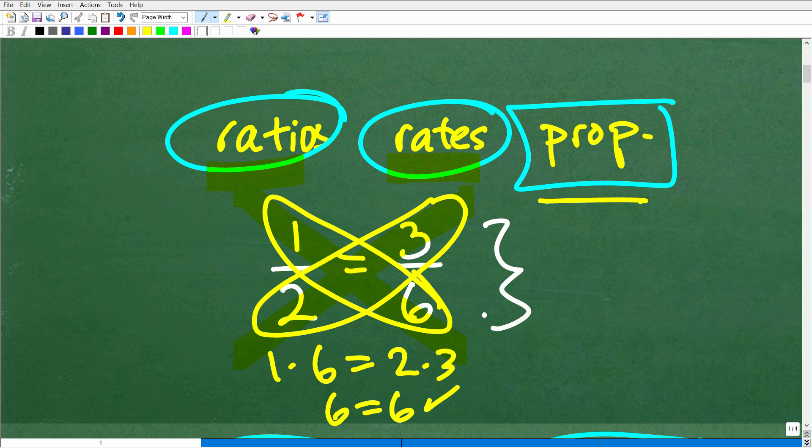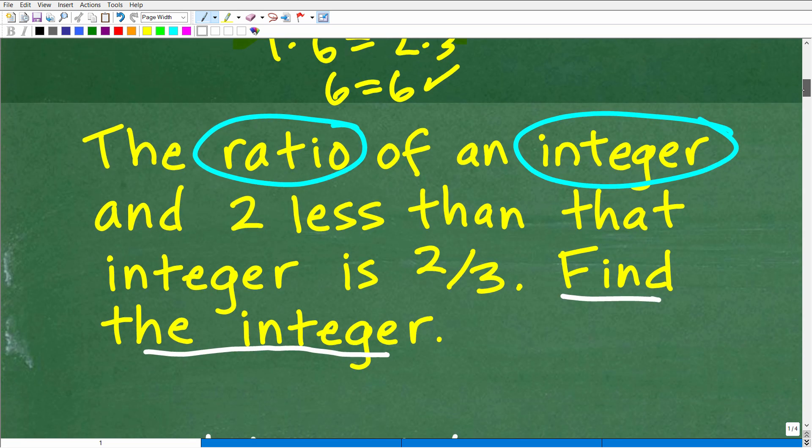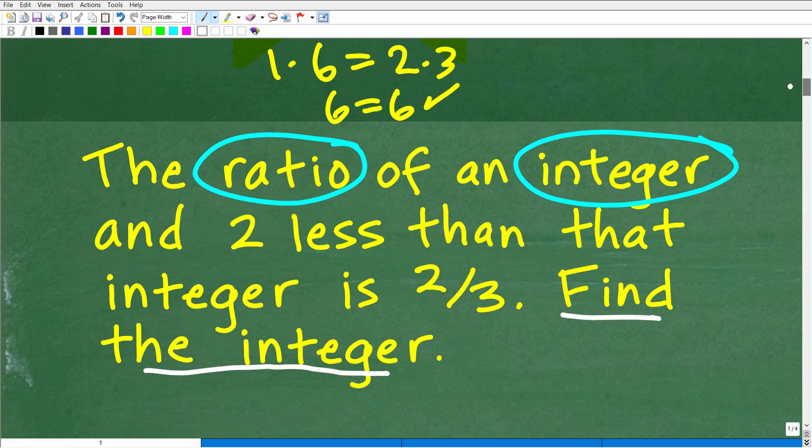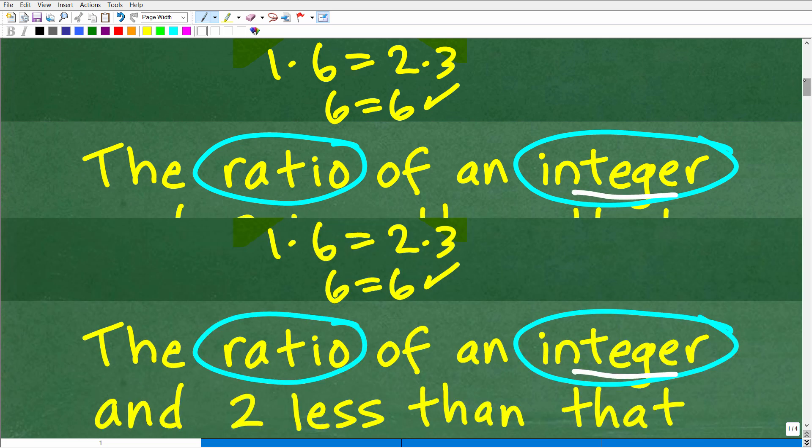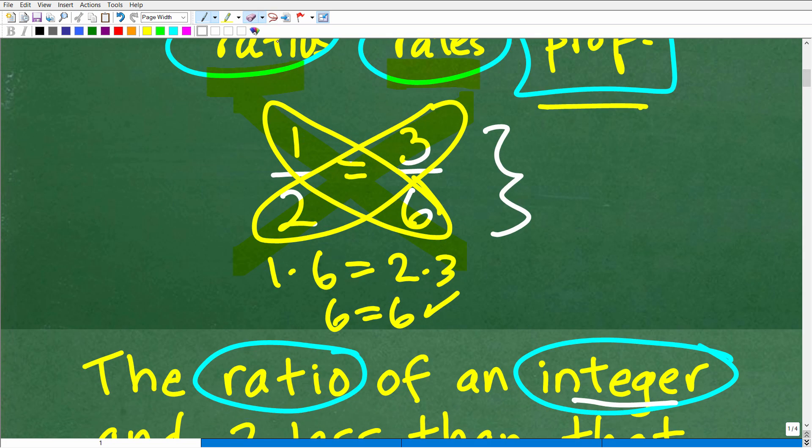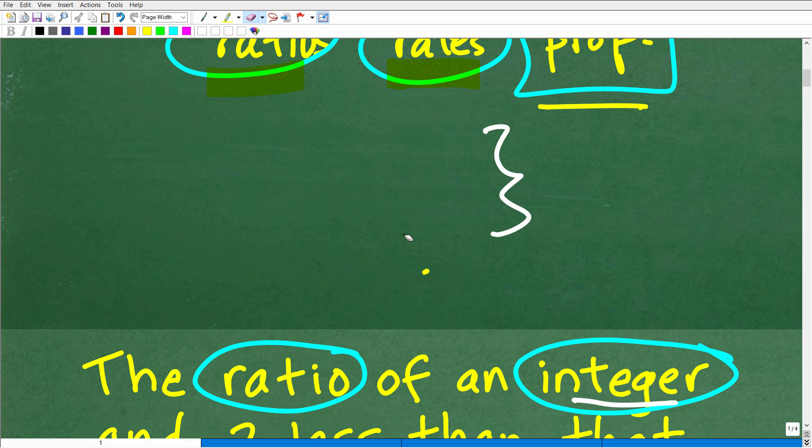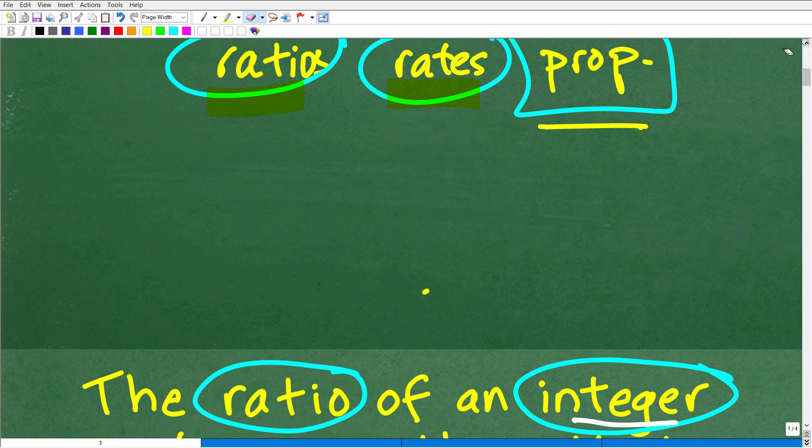There's other fancy words, descriptions that we could talk about proportions. There's things called the means and the extremes. And there's even other additional proportion properties. But let me just tell you right now, if you remember the cross product, you'll be good to go. All right, so that's a quick power lesson on ratios, rates, and proportions. So now that we understand what a ratio is, let's make sure we understand what an integer is.